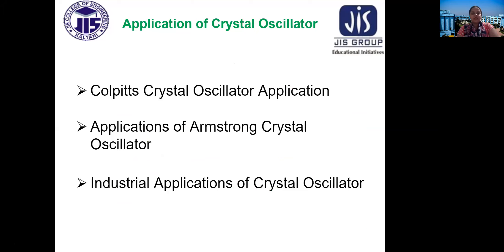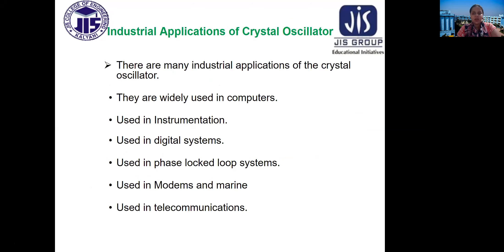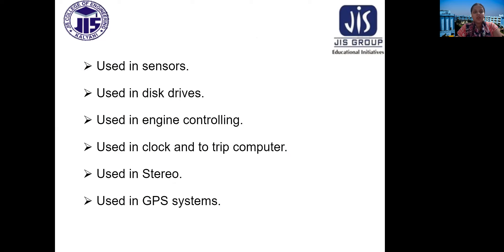Applications of crystal oscillators include the Colpitts crystal oscillator, Armstrong crystal oscillator, and industrial applications. Industrial applications of crystal oscillators are widespread: they are used in computers, instrumentation, digital systems, phase-locked loop systems, modems, marine, and telecommunications. They are also used in sensors, disk drives, engine controlling, clock and trip computers, stereo systems, and GPS systems.